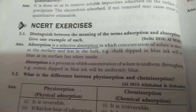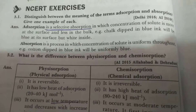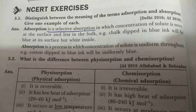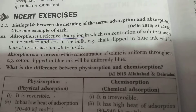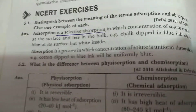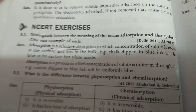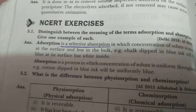Continuing with the video, let's cover the NCERT question answers of Chapter 5, Surface Chemistry. The first question is: distinguish between the meaning of the terms adsorption and absorption, and give one example. This is a very simple question and it is asked many times in exams for two marks. Adsorption is basically a surface phenomenon and absorption is a bulk phenomenon.